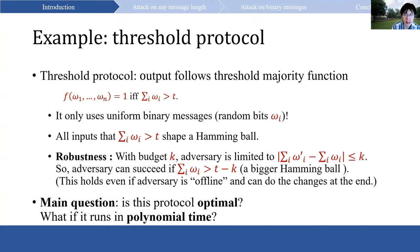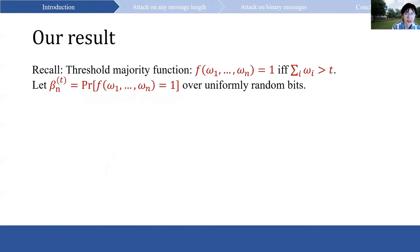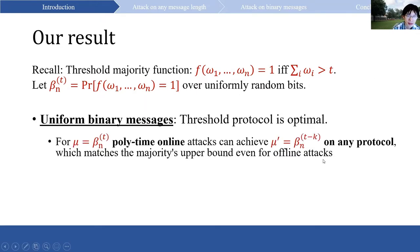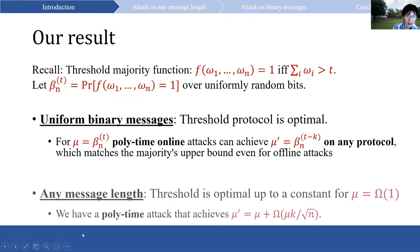Our goal is to answer the question of whether the threshold protocol is optimal when the adversary runs online in polynomial time. In this paper, we show that in the case of uniform binary messages, the threshold protocol is indeed optimal. Let beta_{t,n} be the probability of b equals 1 for threshold t on the n-party setting. For mu equals beta_{t,n}, a polynomial time online attack can achieve mu prime equals beta_{t-k,n} on any protocol, matching the majority's upper bound even for offline attacks. For the case with any message length, the threshold is optimal up to a constant for mu equals omega(1): we have a polynomial time attack achieving mu prime equals mu plus omega(mu · k / sqrt(n)).